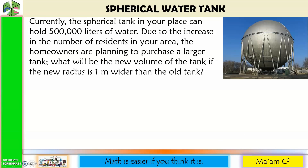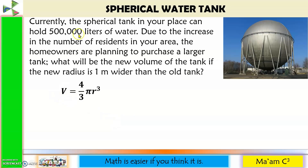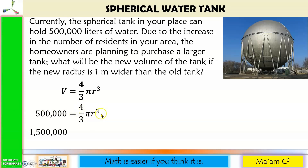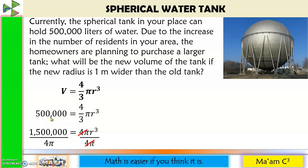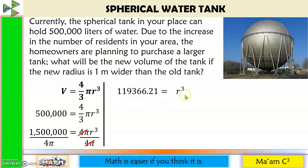Let us have another one. Currently, the spherical tank in your place can hold 500,000 liters of water. Due to the increase in the number of residents in your area, the homeowners are planning to purchase a larger tank. What will be the new volume of the tank if the new radius is 1 meter wider than the old tank? The volume of a spherical tank is 4 thirds pi R cubed. Substituting 500,000 and applying cross-multiplication: 500,000 times 3 is 1,500,000, giving 4 pi R cubed. Dividing both sides by 4 pi: 1,500,000 divided by 4 pi equals 119,366.21, leaving R cubed.